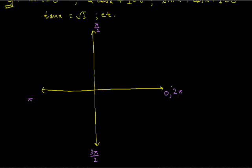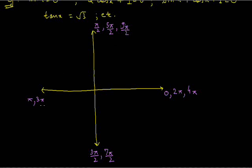After this, when we add pi by 2 to 2 pi, we get 5 pi by 2, then 3 pi, then 7 pi by 2, then 4 pi. When we move from 2 pi to 4 pi, we have completed the second revolution. Now we are starting the third revolution, 4 pi to 6 pi: 4 pi, 9 pi by 2, 5 pi, 11 pi by 2, 6 pi, and so on.